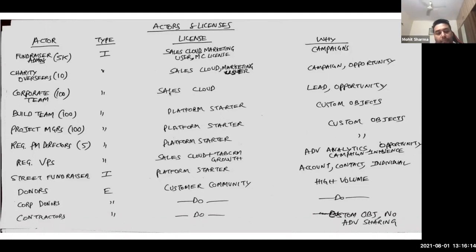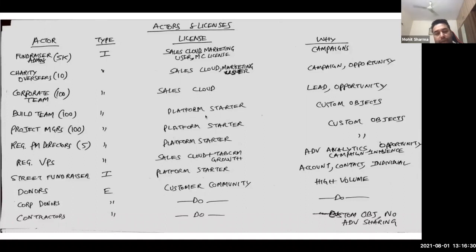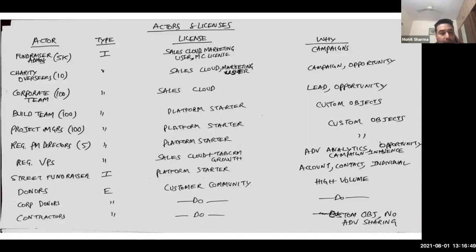Corporate team will be dealing with corporate customers who are donors — I'm recommending Sales Cloud license because they need access to lead and opportunity building. Designers on the projects (road infrastructure projects) — I'm recommending Platform Starter license because they just need access to custom objects. Project managers also need to oversee the design of infrastructure projects, so I'm also recommending Platform Starter. Regional PM directors, for the same reason, Platform Starter, and project managers report to them.